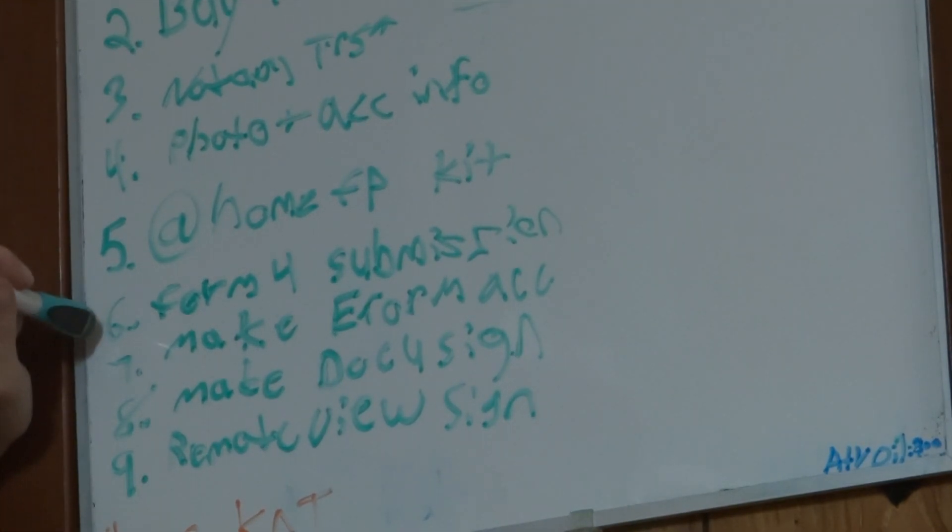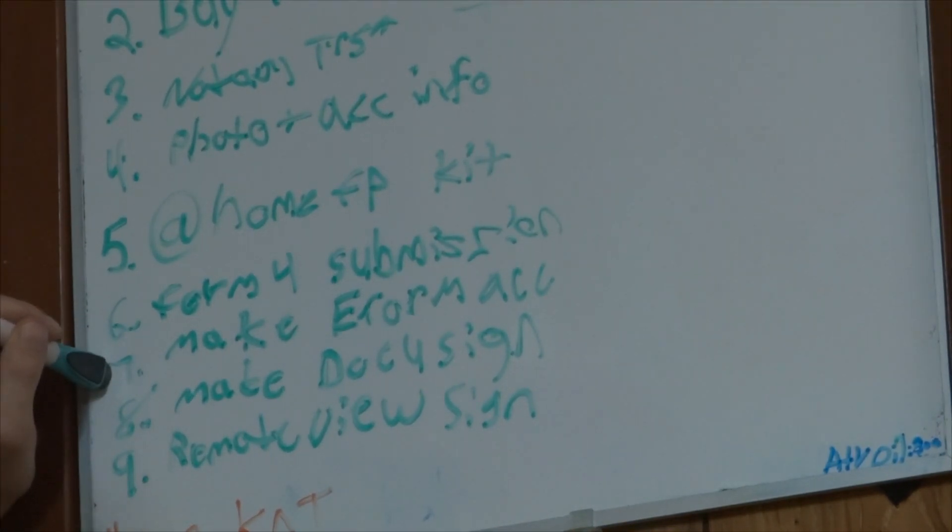After the at-home kit, your Form 4 work will be ready to start. In order to start that, you'll need to make an eForms account and a DocuSign account. DocuSign is an app on your phone that you'll use to get your digital signature for the Form 4.